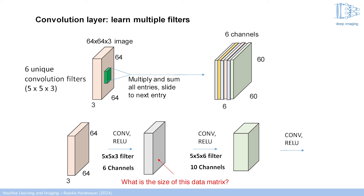Here we have an input 64 by 64 pixel image with three color channels, and we're going to apply a 5×5×3 filter with six channels. The output size is 60×60×6. You apply the (N minus F) over 1 formula to get the spatial dimensions, and then the six channels give the sixth dimension along the third axis.